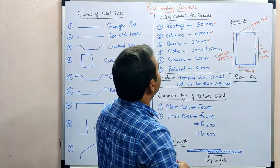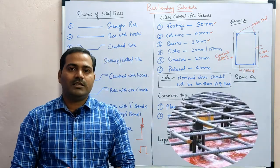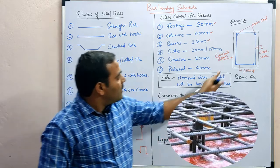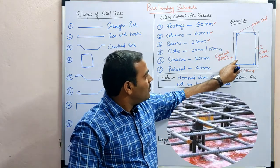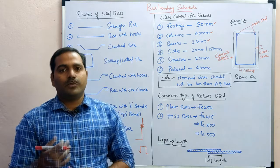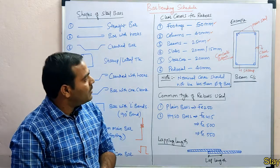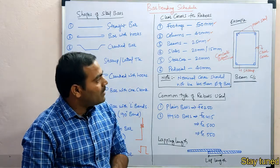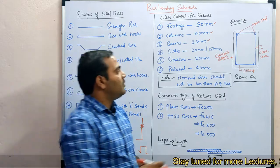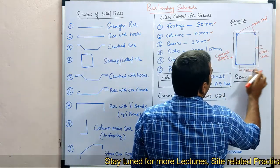One more type is a chair. A chair is provided when two layers of reinforcement are distant from each other. Now, coming to clear covers — a clear cover is the gap provided between the concrete face and the reinforcement face. This gap provides safety to the reinforcement, protecting it from environmental conditions.